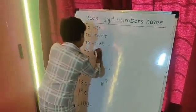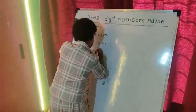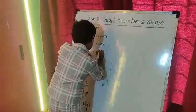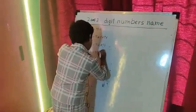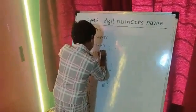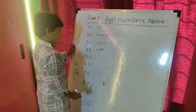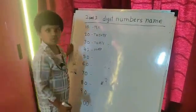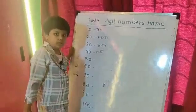30. F, O, U, R, T, Y. What is this? 4, 40.